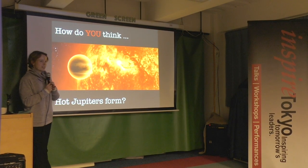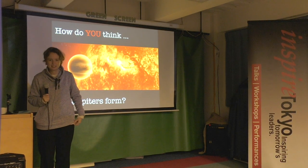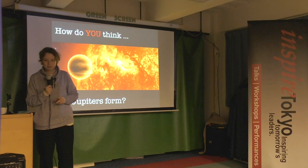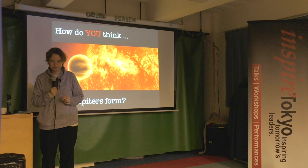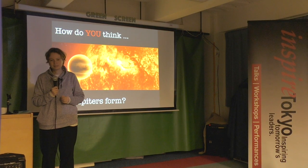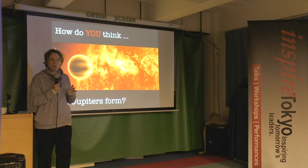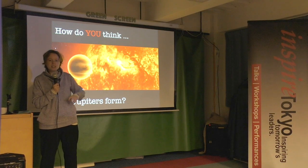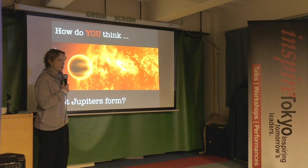One idea from the audience: it first started out as a small Mercury-like planet, but since there wasn't enough material around it, the Sun eventually radiated enough gas — because it was so close — and the planet stole material from the Sun to produce a huge atmosphere. Great idea!